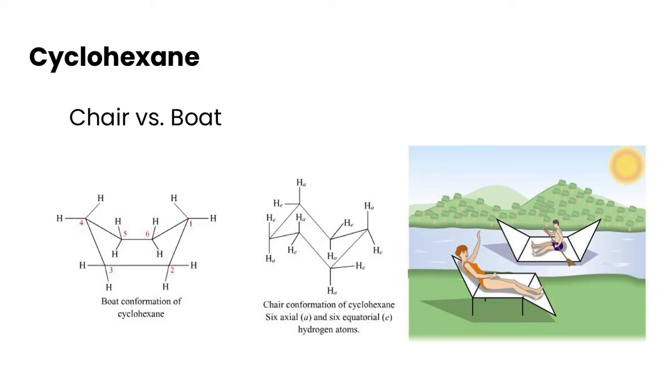One other example of conformational isomers, which is kind of neat, is the cyclical six-carbon alkane. So it's called cyclo, which just means we have a ring structure, and then hexane, so a six-carbon chain.